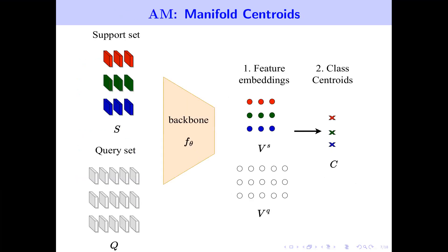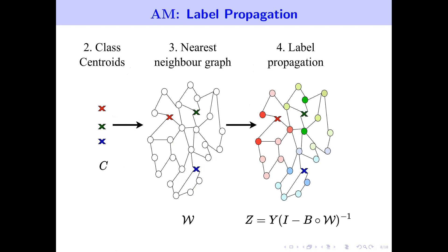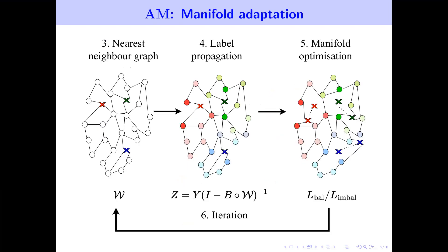Moving on to our method, we start by embedding the support set and query set examples using the pre-trained backbone Fθ. We obtain feature embeddings and, using the labeled support embeddings of every class, we calculate the class centroid of every class. We follow this by constructing a k-nearest-neighbor graph before we carry out label propagation to obtain class predictions for all query examples. We then iteratively adapt the manifold class centroids, along with manifold-specific parameters, in order to obtain the best possible manifold to make predictions for the query examples.